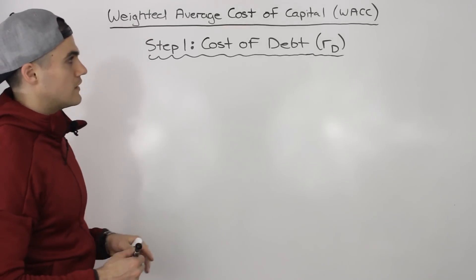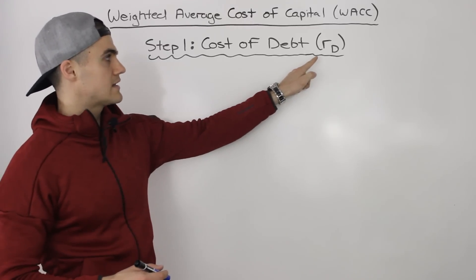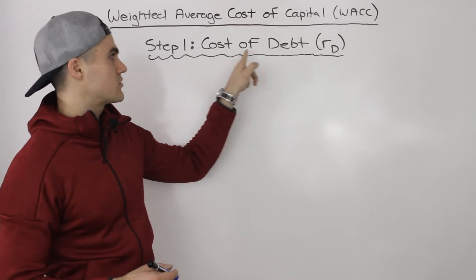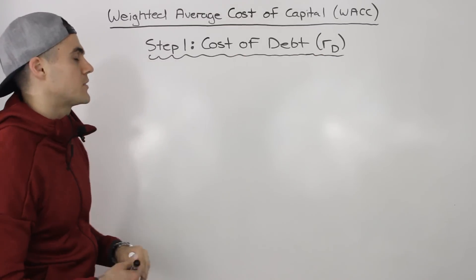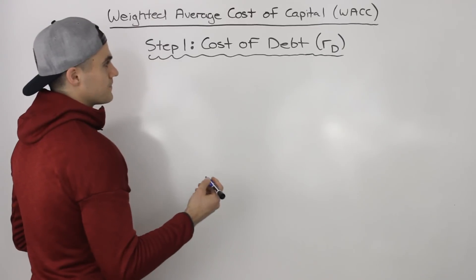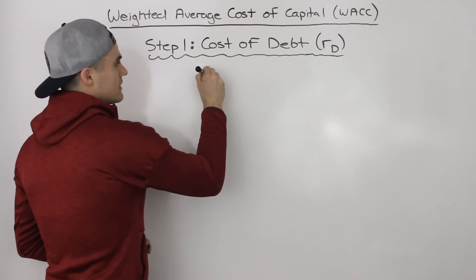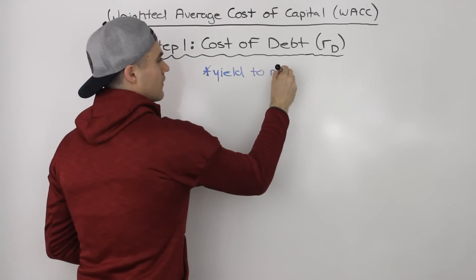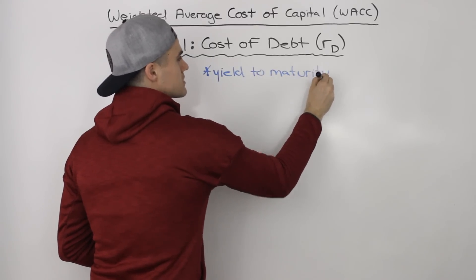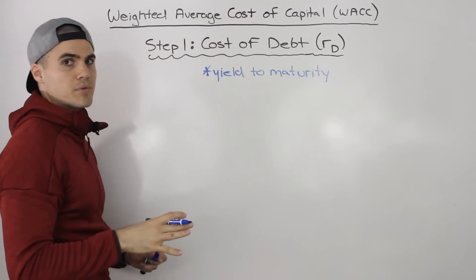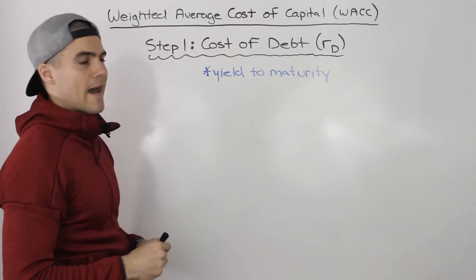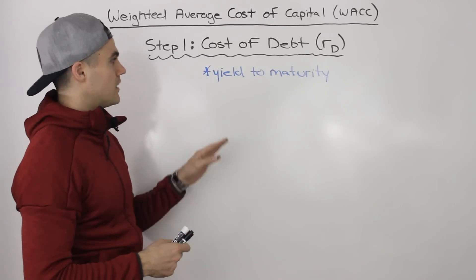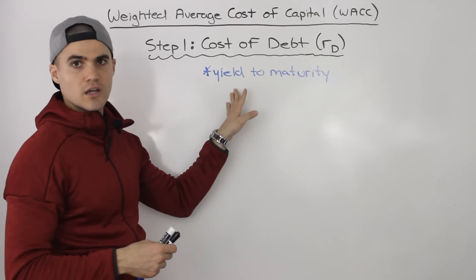So step one, we have to find the cost of debt. And sometimes that is represented as R subscript D, where D represents the debt of a company. The cost of debt is basically the yield to maturity of the bonds that a company has. So you may have to go back to the bonds chapter and review the material there, but it's basically the yield to maturity of the bonds.